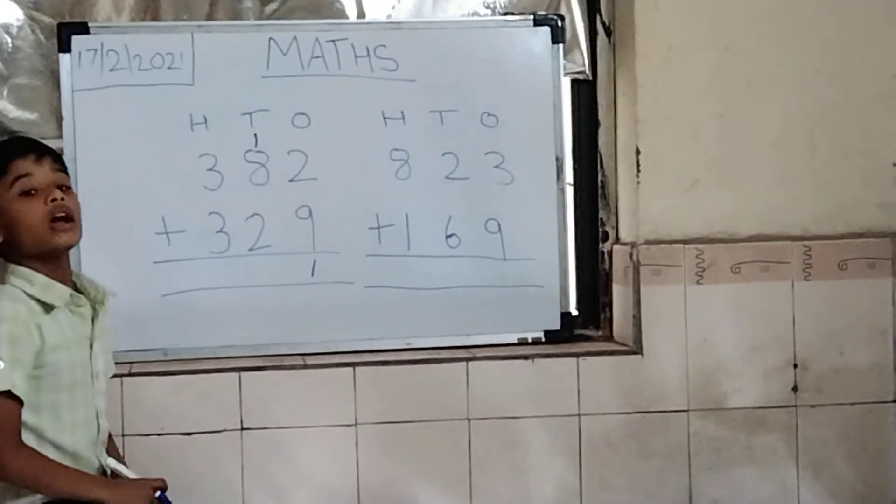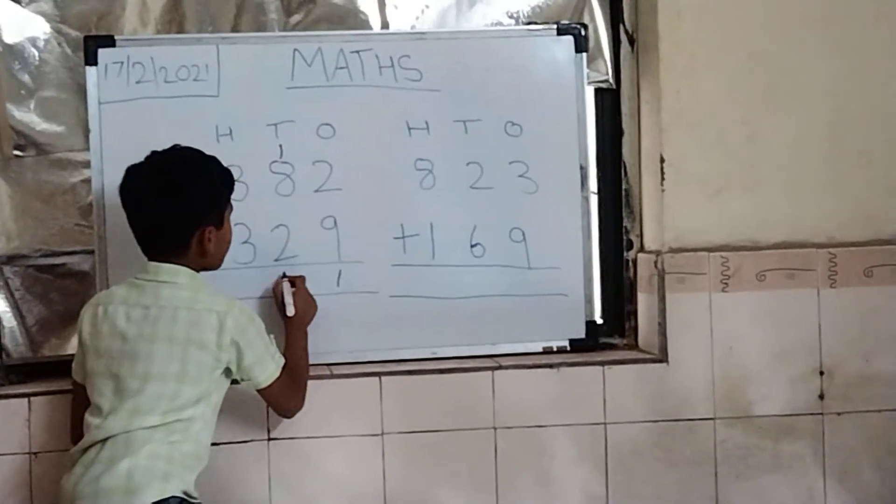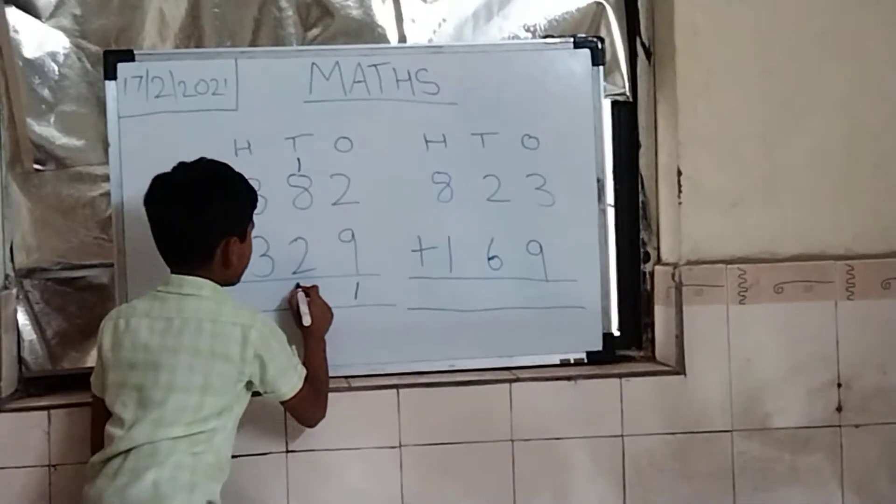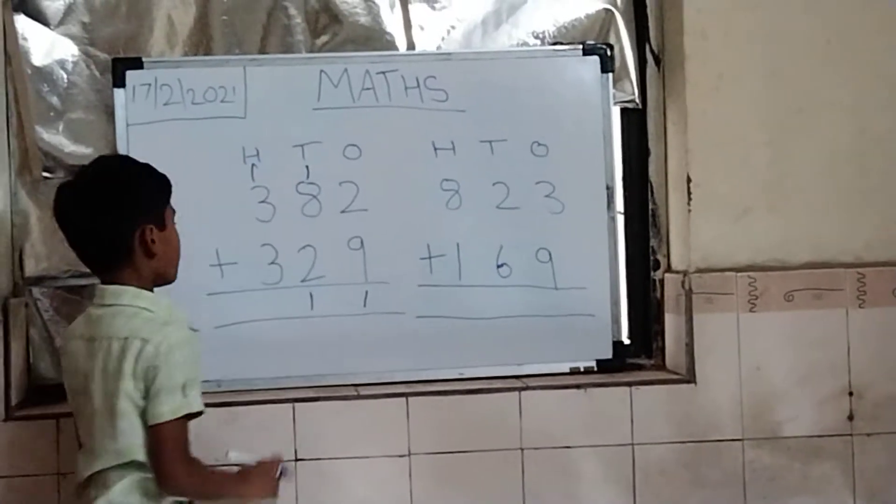8 plus 2 is 10. Then 1 number plus, then answer came 11. 1 write up of carry and 1 write down.